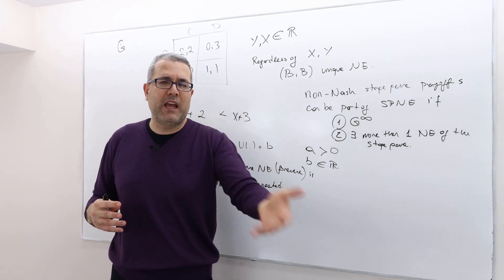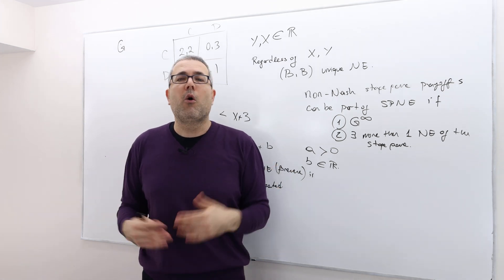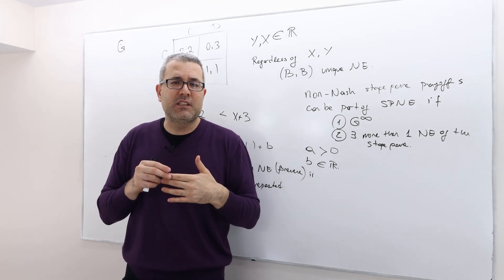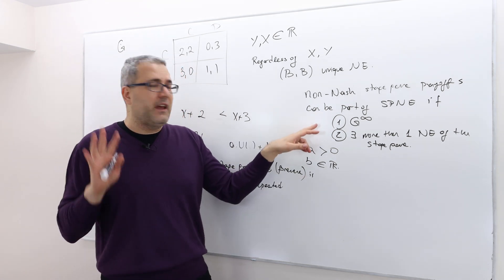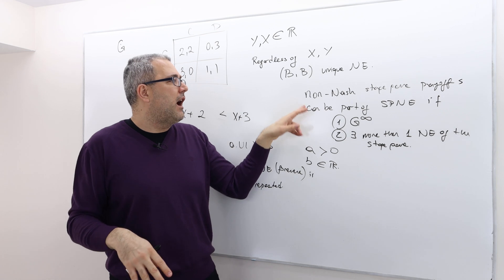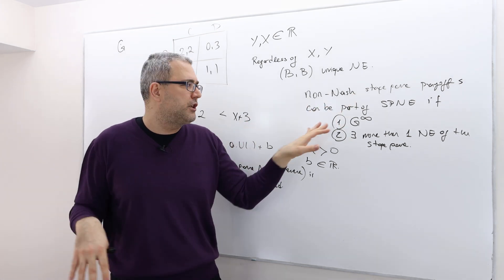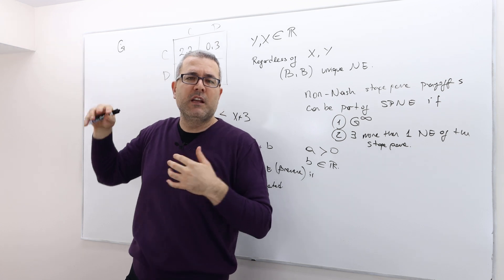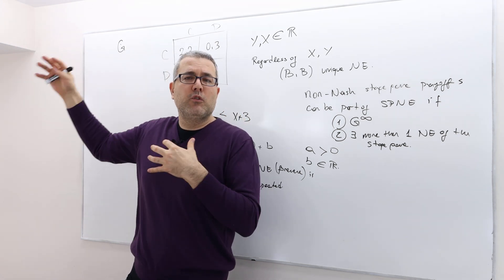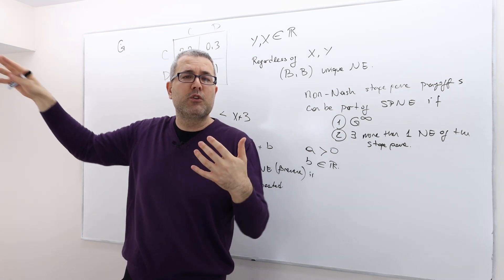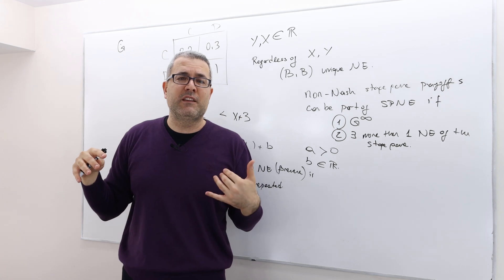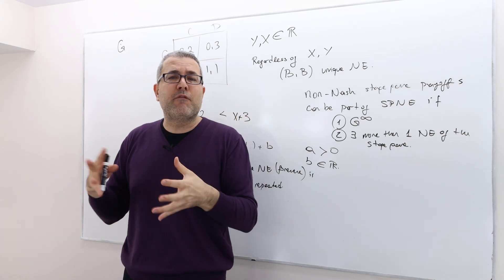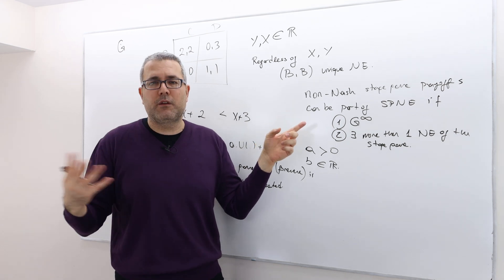Sometimes in experiments, people tell the subjects the game is going to end but they toss a coin with some probability, or they don't tell you when. Therefore, players don't know if it is the last stage or not. If the game has an infinite horizon, non-Nash stage game payoffs can be part of subgame perfect Nash equilibrium. That's because future is very long, and if you screw me today, I'm going to punish you for the rest of your life. That's what folk theorem basically says.